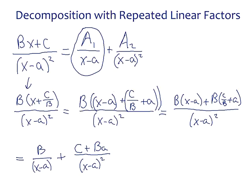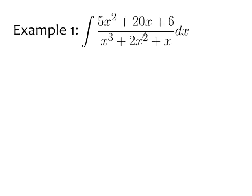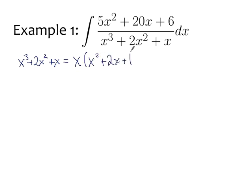Let's look at some examples and work through them. We have 5x squared plus 20x plus 6 over a cubic denominator. First, check: is this improper? No — the denominator has degree 3 and the numerator has degree 2, so we're not improper. We can proceed directly with partial fraction decomposition. Factoring the denominator: x cubed plus 2x squared plus x — I can pull out an x to get x times (x squared plus 2x plus 1), and I recognize that as x times (x plus 1) squared. So we have two linear factors, one of which has multiplicity 2.